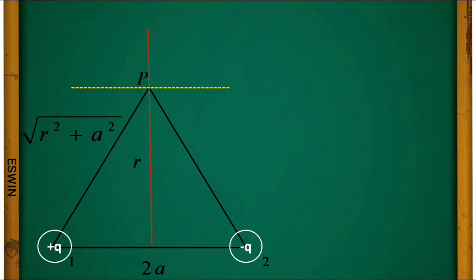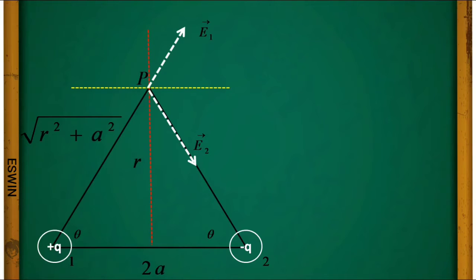Let the electric field at point P due to charge +q be E1-bar and due to −q be E2-bar. Let the angle between the position vector to point P and the dipole axis be theta. We can now draw the vectors E1-bar and E2-bar directed in their respective directions.